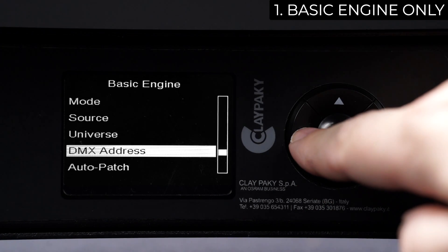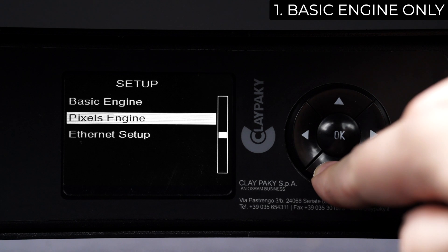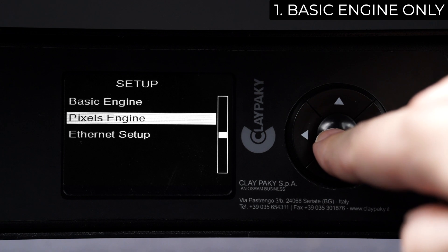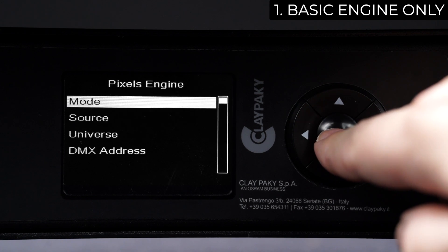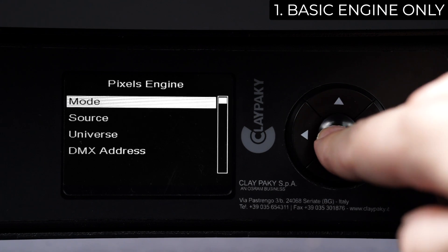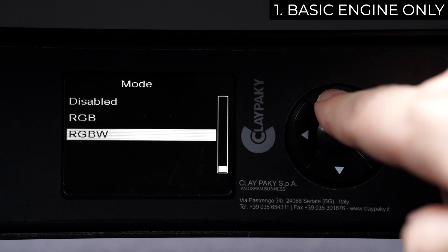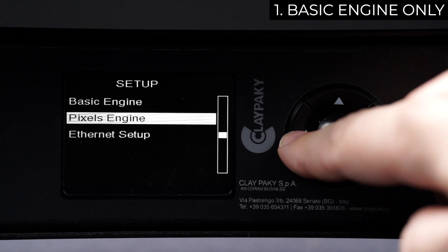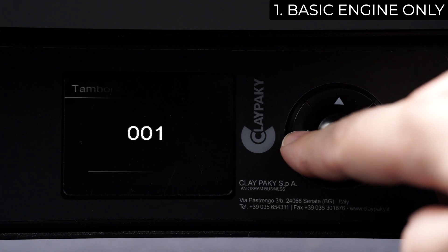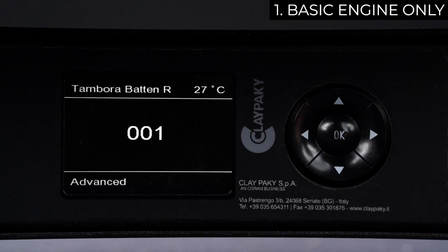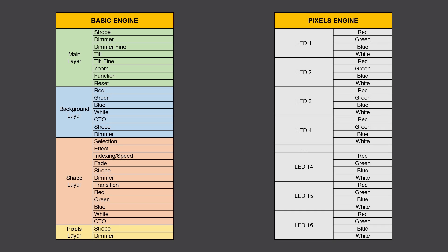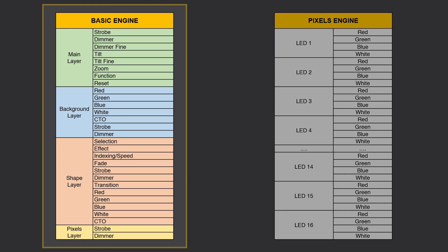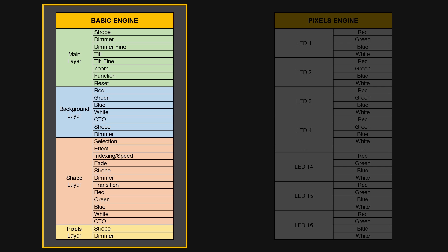Now go back to Setup. Select Pixel Engine Mode and verify that the Disable option is selected. The fixture now responds to console commands, allowing you to control channels included in the Basic Engine.